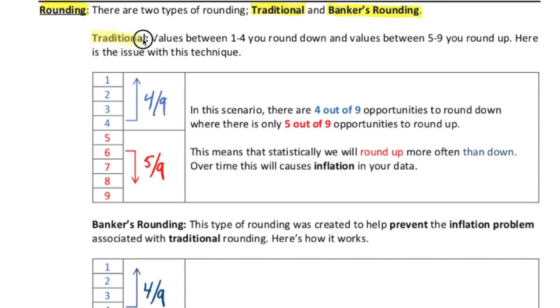Traditional rounding, the type that you've known for many years, has an inherent flaw. The rule is that if you have a number between one and four, you round that down. If you have a number between five and nine, you round up. That's a fairly straightforward rule, but there's an imbalance. Basically, when rounding, you have nine opportunities for rounding with a number that ends with a one all the way through nine. The way traditional is set up is that there's only a four out of nine chance that you're going to be rounding down, whereas there's a five out of nine chance that you're going to round up.